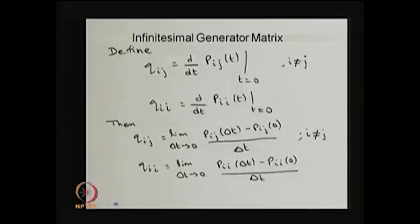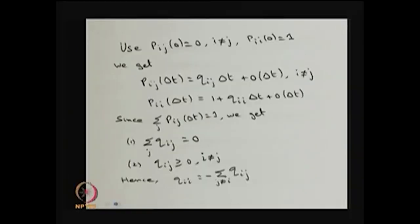The derivative of p_ij(t) with respect to t is the limit as delta t tends to 0 of the difference divided by delta t. Since p_ij(t) is the transition probability of the system moving from state i to j, we use the fact that p_ij(0) equals 0 for i not equal to j, and p_ii(0) equals 1 — meaning the probability of staying in state i over an interval of length 0 is 1.